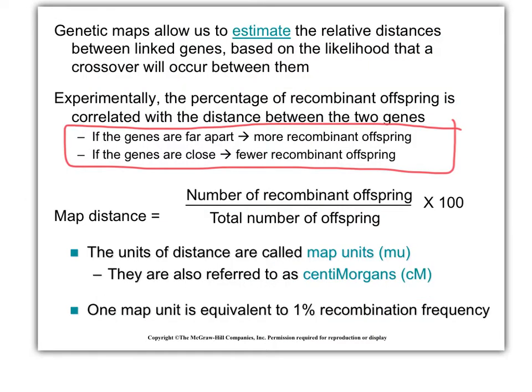So we will estimate the relative distances — relative meaning gene to gene on the same chromosome. Two genes on a different chromosome with the same map units may be a completely different real distance apart. If genes are far apart, we will see more recombinant offspring because recombination or crossing over is random. If genes are very close, we will see fewer.